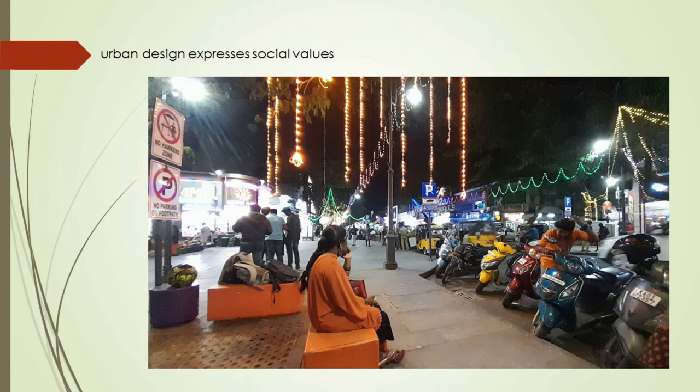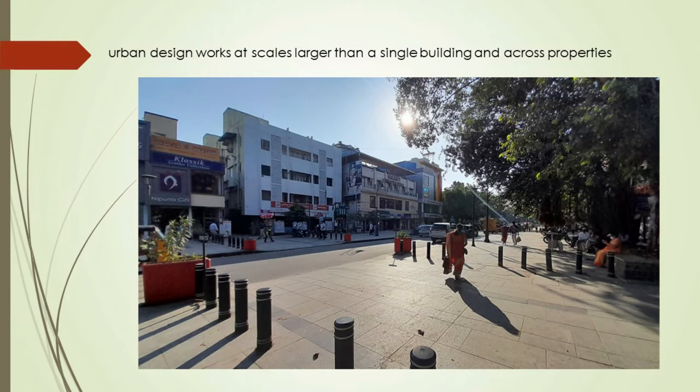Urban design works at scales larger than a single building and across boundaries. Urban design is a practice that goes beyond the single plot, encompassing multiple properties at scales larger than a single building. For example, urban design can take place at the precinct level or higher. As a result, urban design considerations may arise across a range of spatial scales, from the very local — such as a small square or a single local street — to the metropolitan scale.